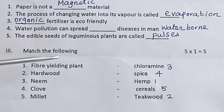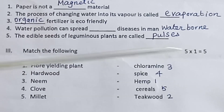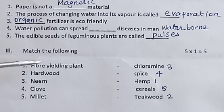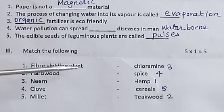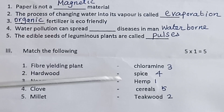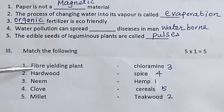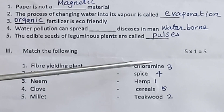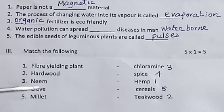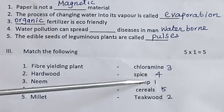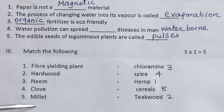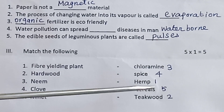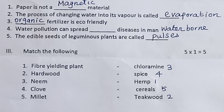Room letter 3, match the following. 5 into 1 is equal to 5. Fiber yielding plant: Hemp. Hardwood: Teakwood. Neem: Chloramine. Clove: Spice. Millet: Cereals.